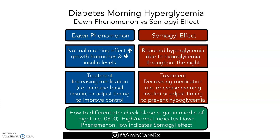What is the treatment for the Somogyi effect? It is to decrease the medication in the evening, because of the hypoglycemia — that's why in the early morning the body is putting out glucose to increase the level. For the Dawn phenomenon, the treatment is to increase the insulin or adjust the timing to improve glycemic control.